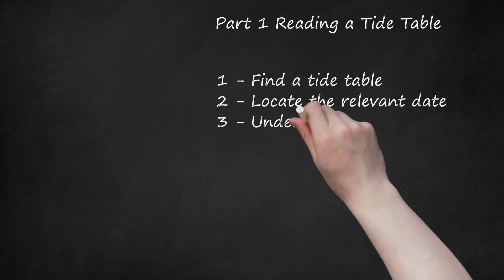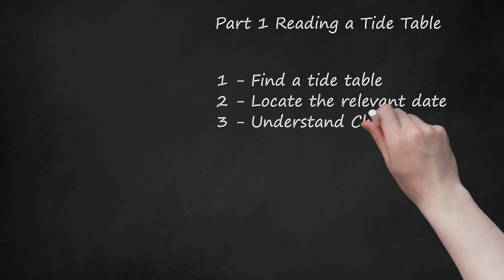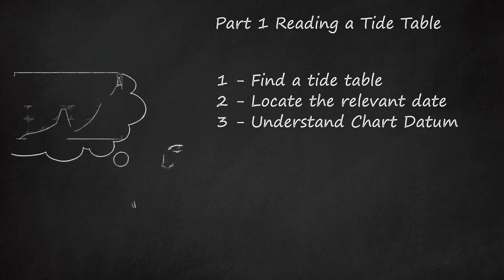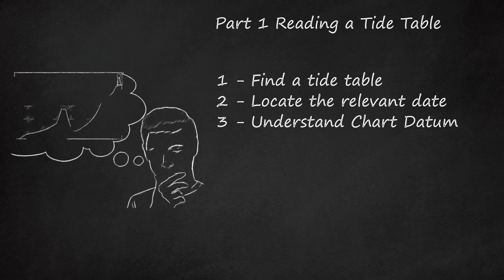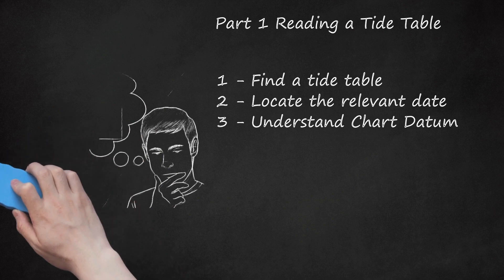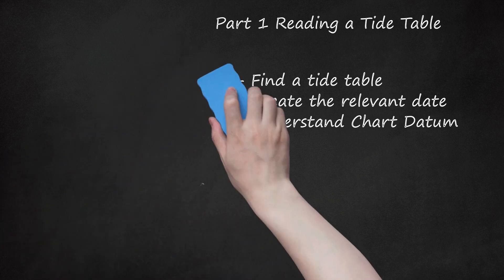Step 3: Understand Chart Datum. This term refers to a plane of reference against which tidal heights are measured. It is an average of low tide heights. This number is set low so that most low tides will not fall below it. It is also the reference point that nautical charts use to measure depth.